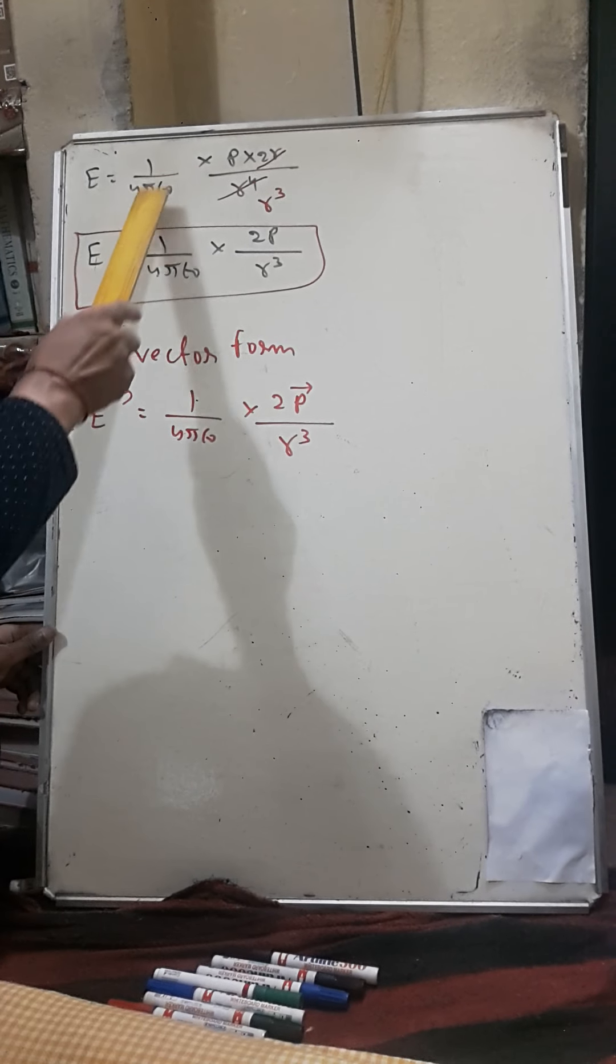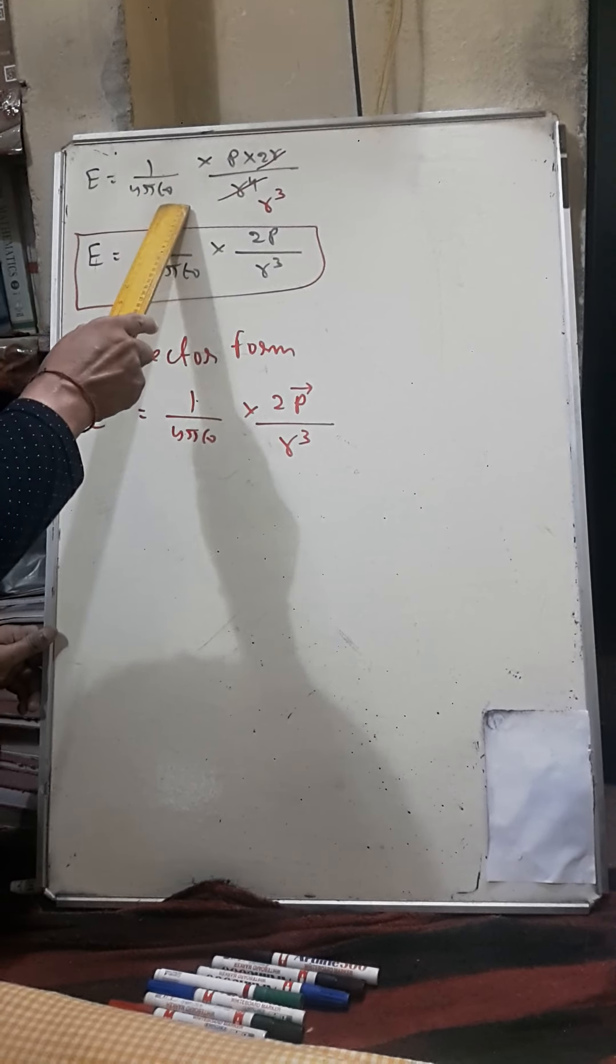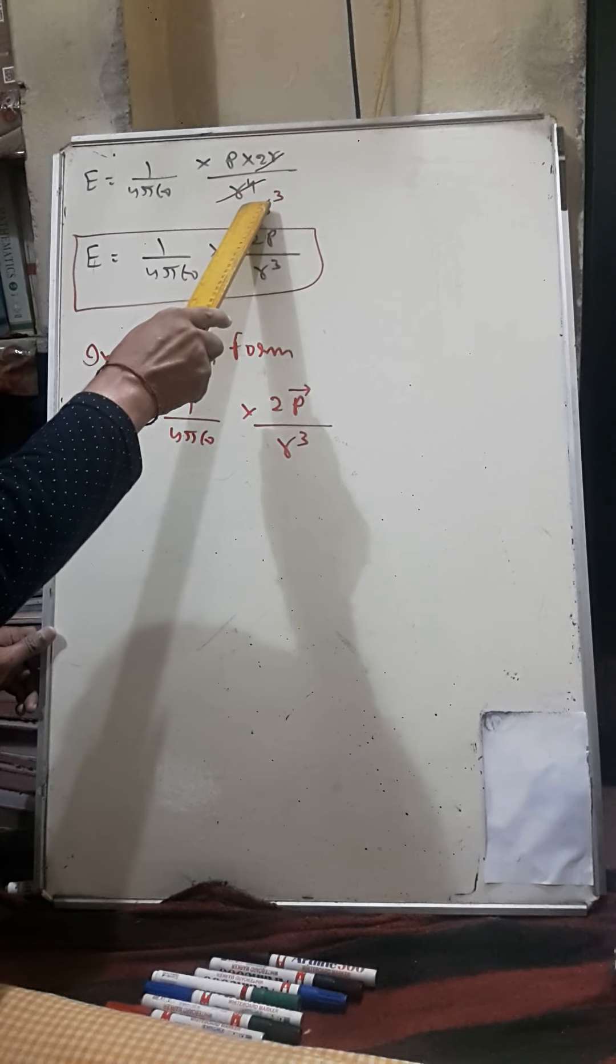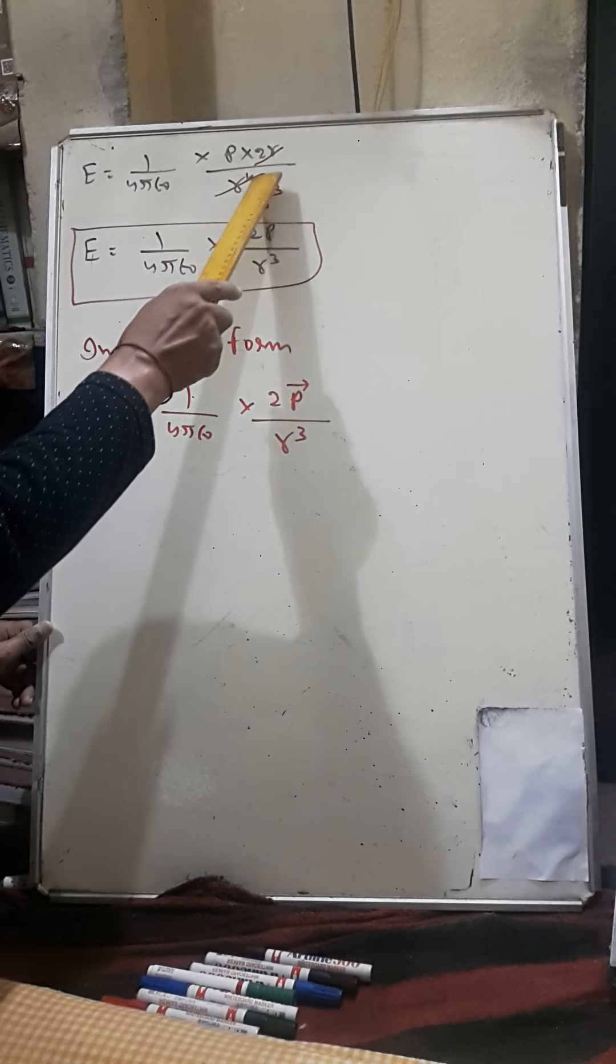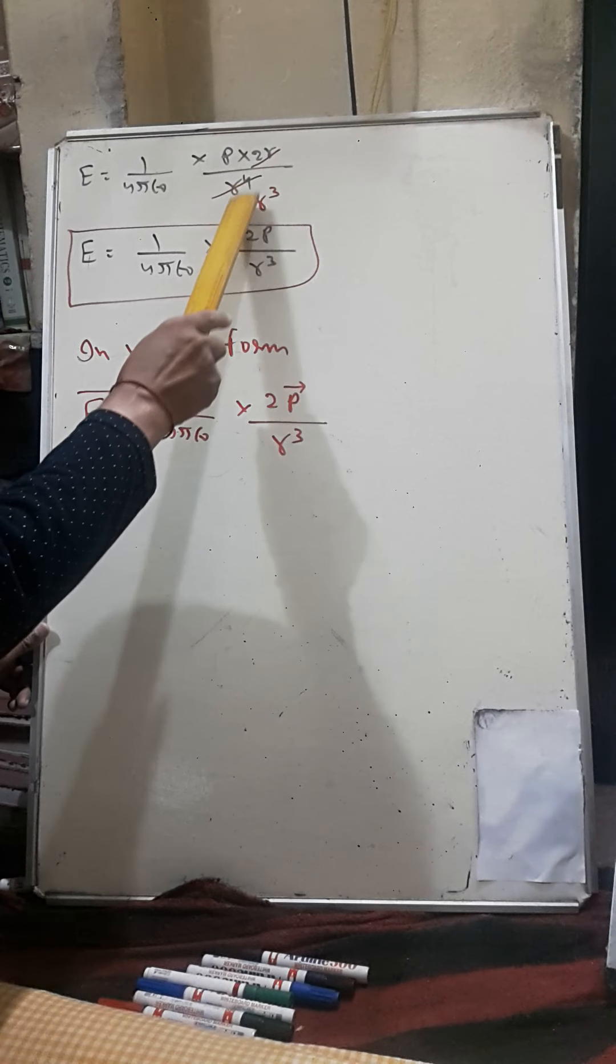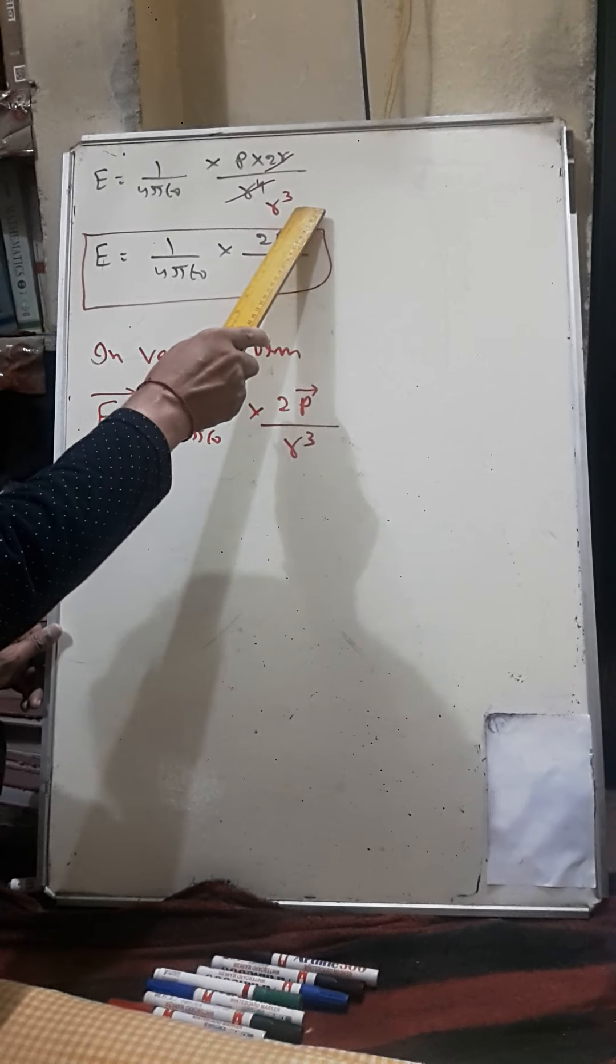E is equal to 1 upon 4π epsilon naught, P into 2r. L square was neglected. It was overall whole square, so r to the power 4 will come. R from r to the power 4 will cancel, leaving r cube.